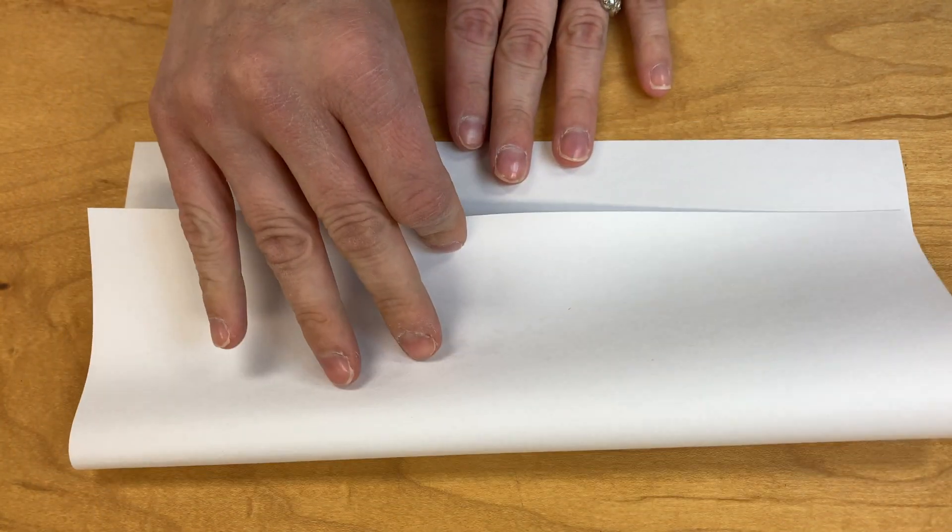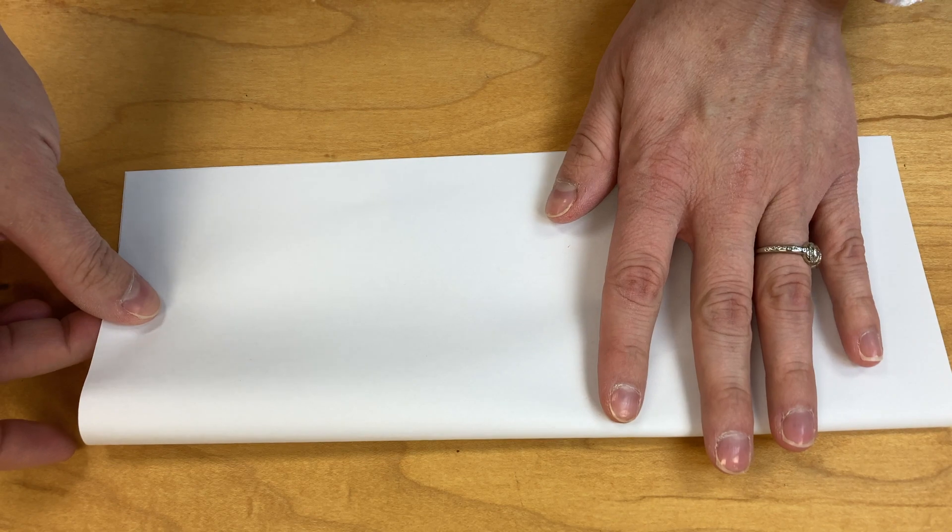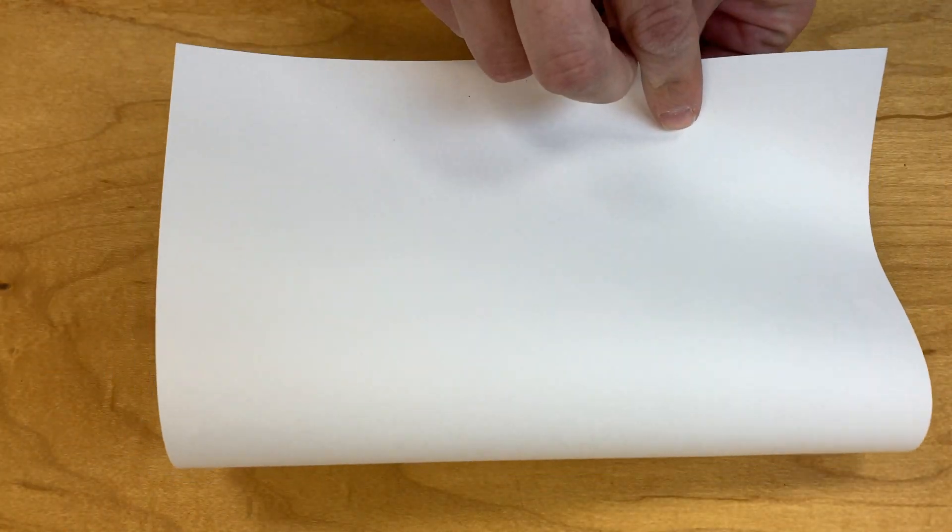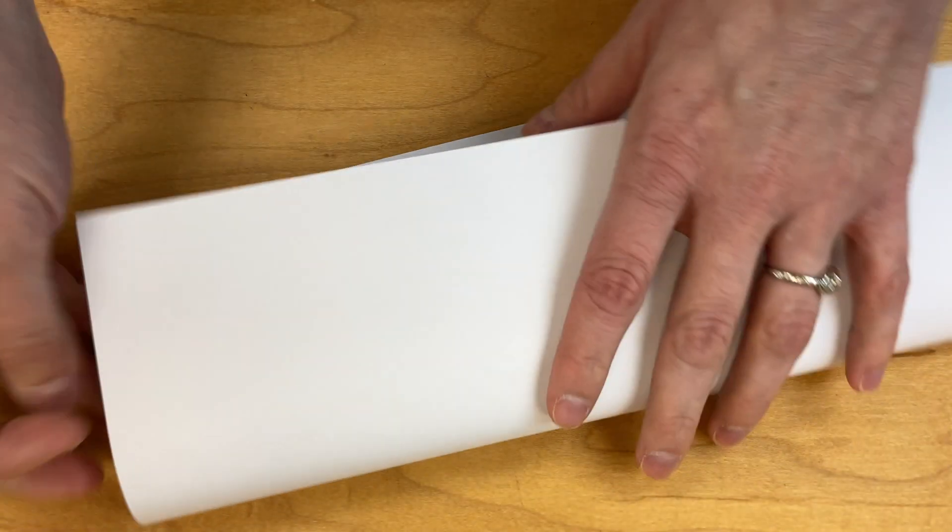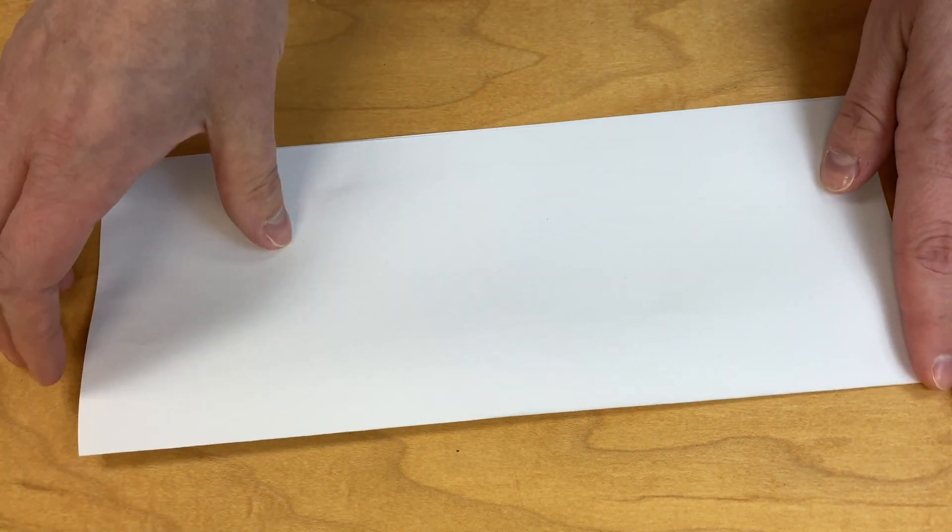First you're going to take your piece of paper and you're going to fold it in half the long way. Sometimes we call this way the hot dog way, right? So we're not folding it short so it's fat, we're actually folding it long. So you'll fold it in half the long way just like that.